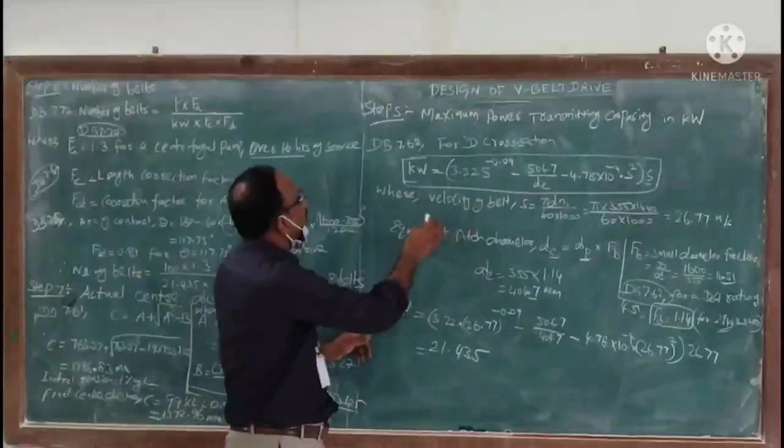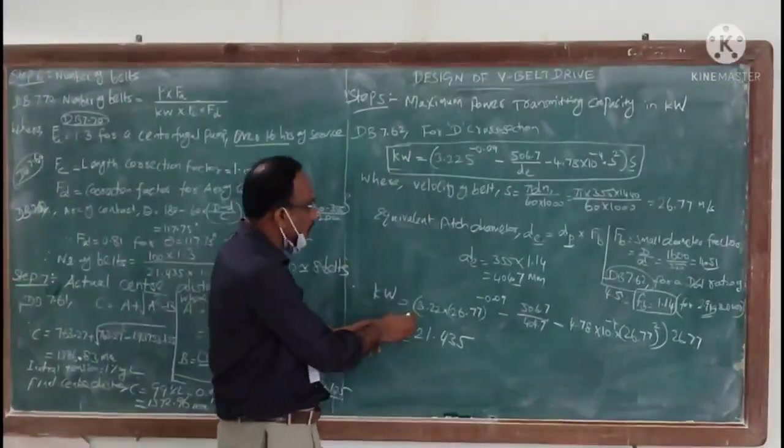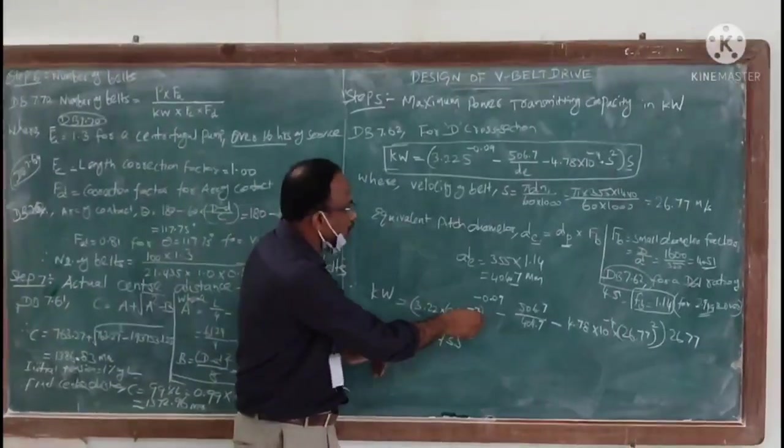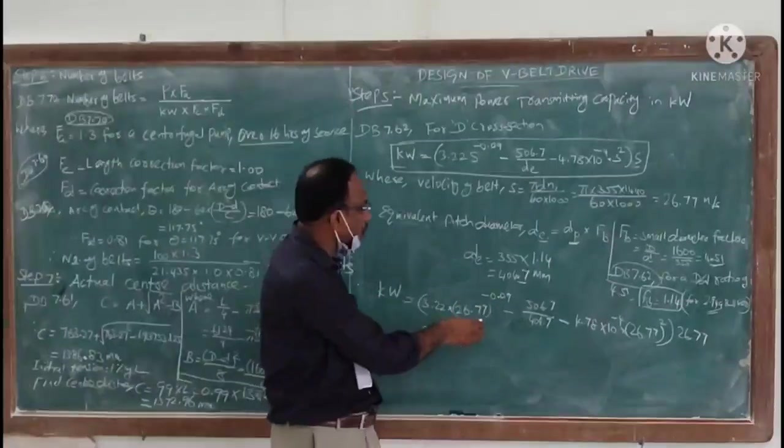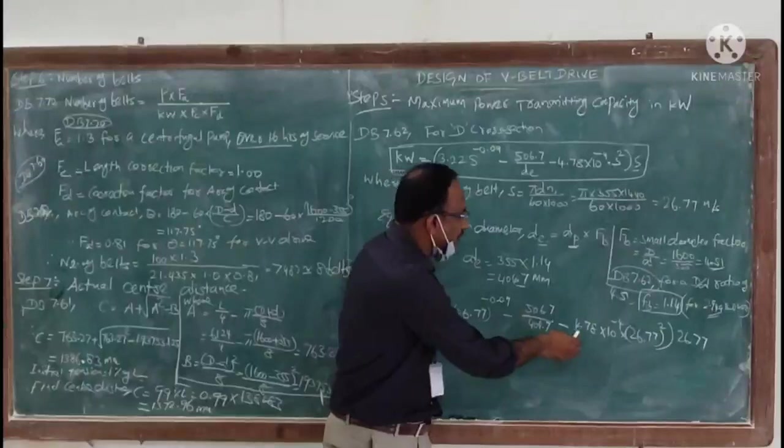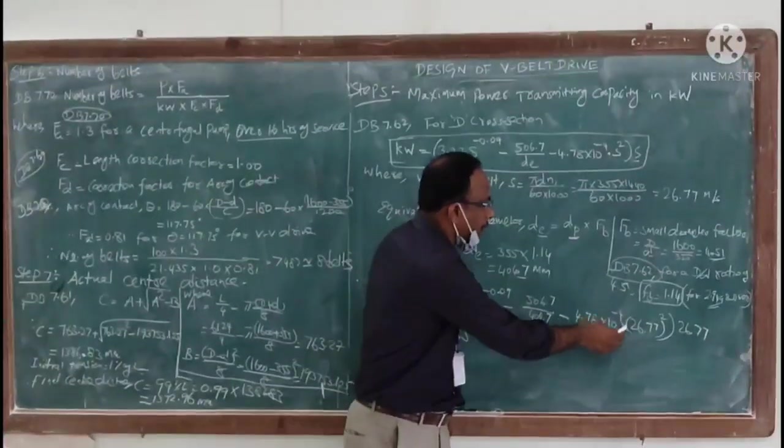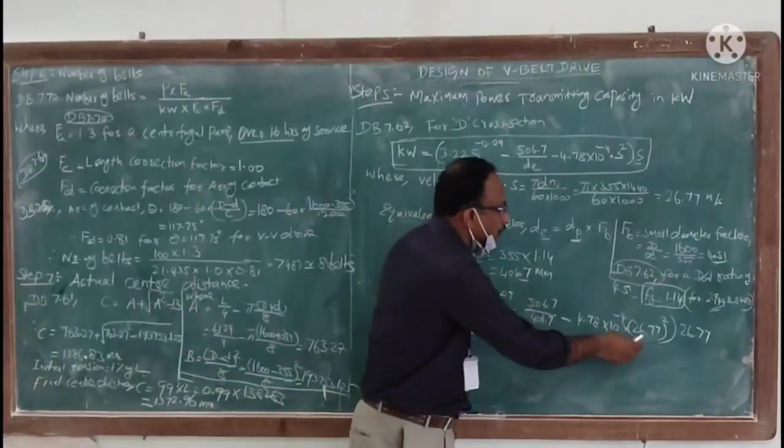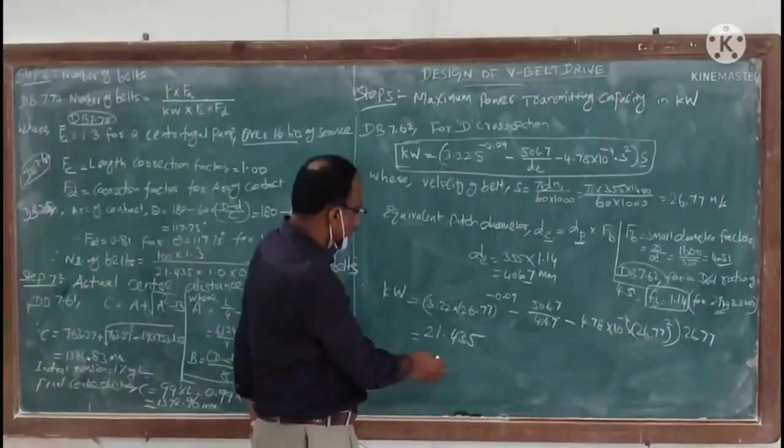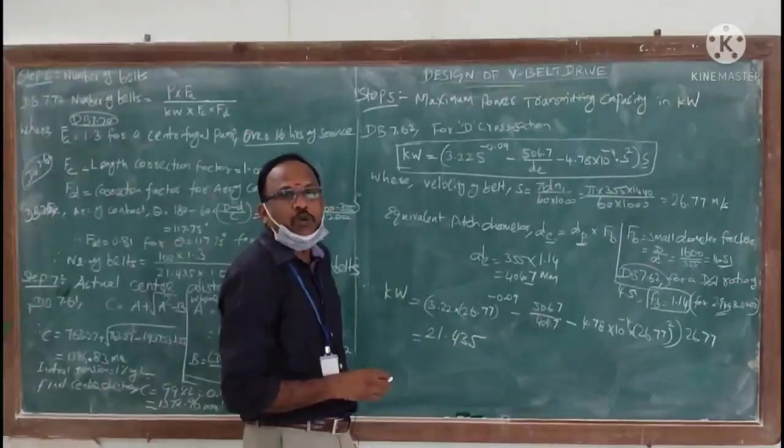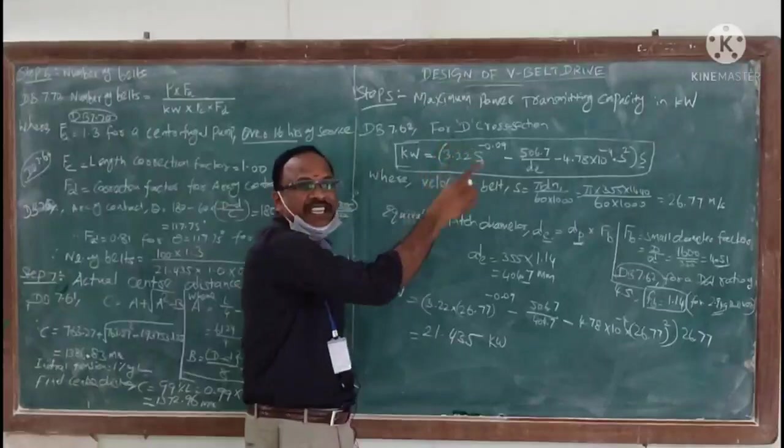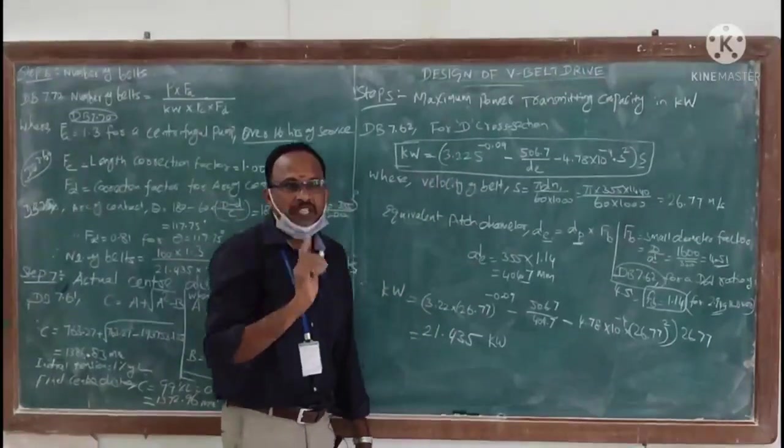Now substitute these two values: 355 times 1.14, multiplying we can get the equivalent diameter as 404.7 millimeter. Now substitute all the values in this equation. The kilowatt is equal to 3.22 times 26.77 to the power of minus 0.09 minus 506.75 by 404.7 minus 4.78 times 10 power minus 4 multiplied by 26.77 whole square, whole multiplied by 26.77. We get the value of 21.435 kilowatt. This is the maximum power transmitting capacity of single belt.